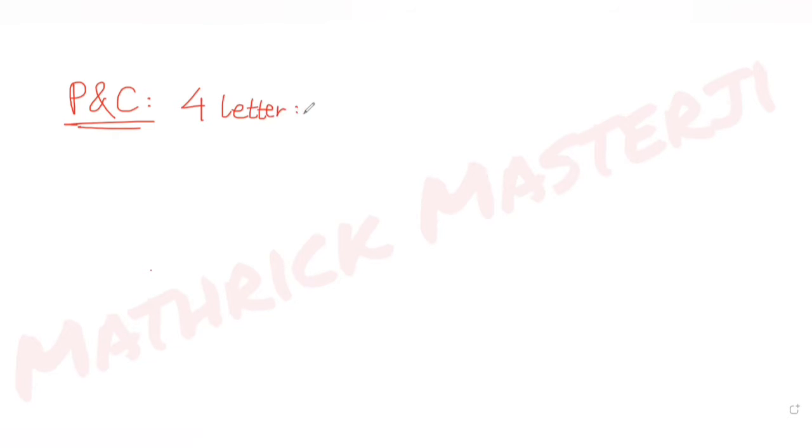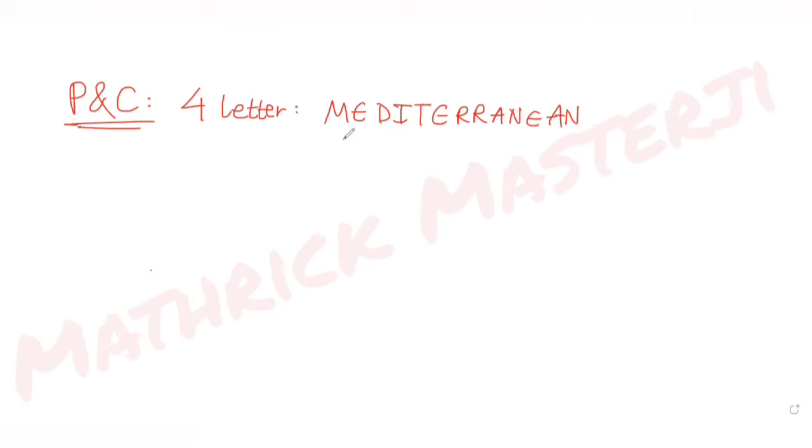Hi guys, I hope you are all doing well. Let's see today's question. Today's question is from the topic of permutations and combinations. The question tells us that four-letter words, which need not be meaningful, are to be formed using the letters from the word MEDITERRANEAN — M, E, D, I, T, E, double R, A, N, E, A, N.